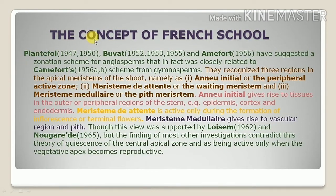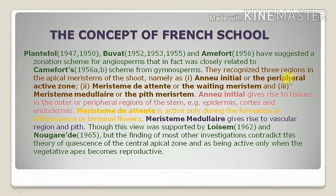The next theory is the concept of the French school, studied by Plantefol, Buvat, and Amiford. There is a zonation scheme for both angiosperms and gymnosperms. There are three areas in the apical meristem of the shoot: the peripheral active zone, also known as anneau initial; the méristème d'attente, or waiting meristem; and the pith meristem.